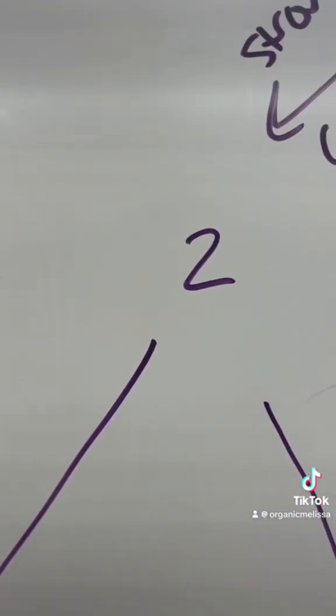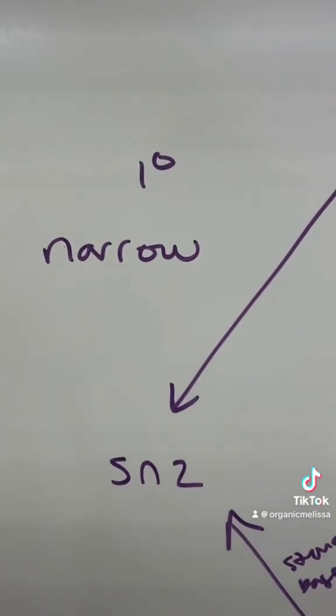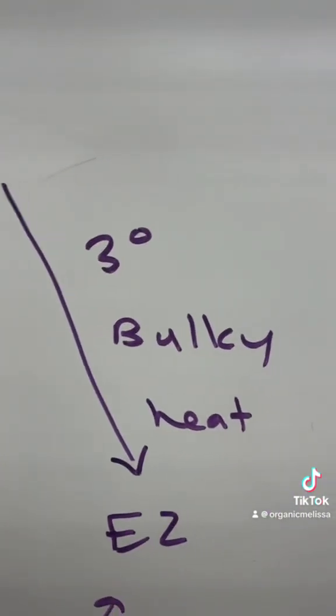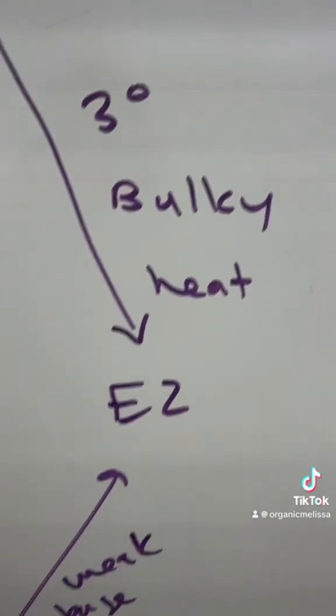Once you know that it's gonna favor a two, if your substrate is a primary leaving group or if your nucleophile is narrow, it's gonna favor SN2. If you have a tertiary leaving group for your substrate or if you have a bulky nucleophile or if there's heat, it's gonna favor E2.